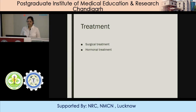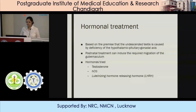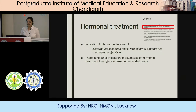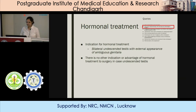Coming to treatment, surgical treatment and hormonal treatment have been mentioned. Hormonal treatment is based on the premise that undescended testes is caused by deficiency of the hypothalamic-pituitary-gonadal axis, and postnatal treatment can induce the required migration of gubernaculum. Hormones that have been tried include testosterone, HCG, and LHRH. However, hormonal treatment is not practiced with the intent of bringing the testes down to the scrotum. The only indication for hormonal treatment is bilateral undescended testes with external appearance of ambiguous genitalia. As Dr. Shankar also mentioned, hormonal treatment for bringing the testes down in cases where there is functional testicular tissue can cause decreased spermatogenesis later on in life.